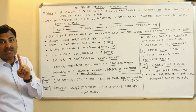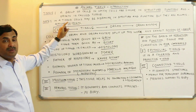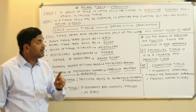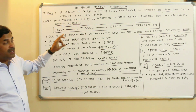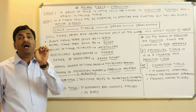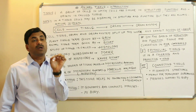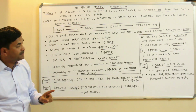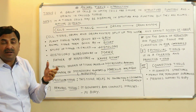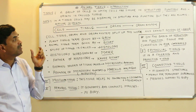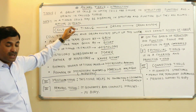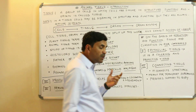One important thing to note: in a tissue, cells may be dissimilar in structure or function, but they are always common in origin. In a tissue, cells may be dissimilar in structure and function, but they are always having a common origin.